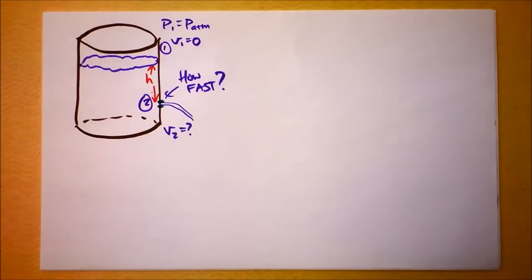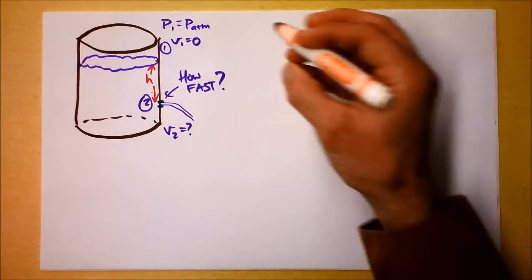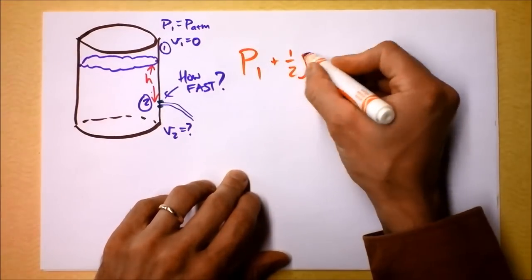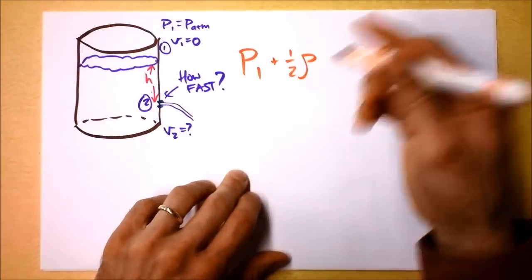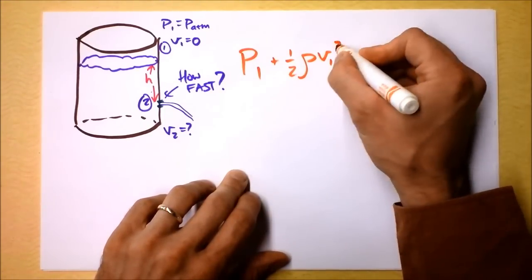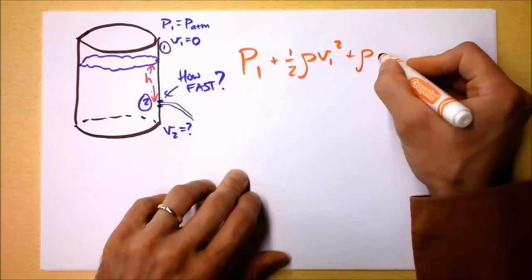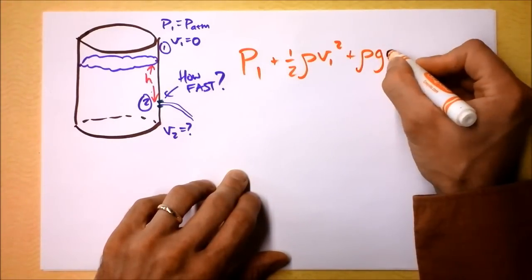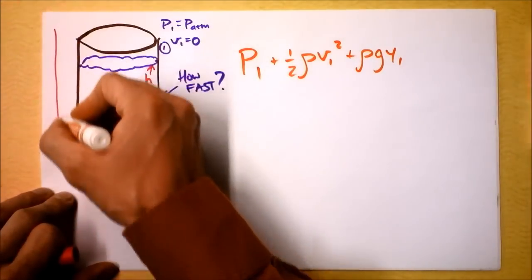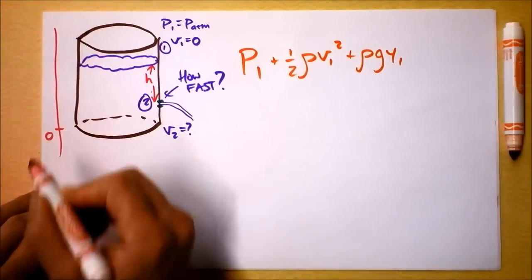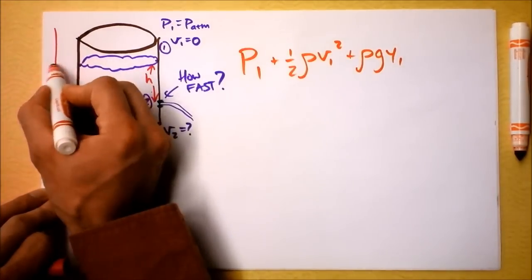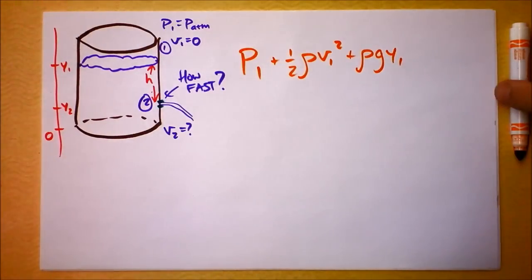So, we're going to apply Bernoulli's equation. Now, Bernoulli tells us that the pressure at Location 1 plus 1 half the density, and of course it's just water, so it's all going to be the same density in all these equations, times the speed at 1 plus the density times baby G times the height at 1. Let's put up a little scale over here. We could call this 0, and we could call this Y2, and we could call this Y1.